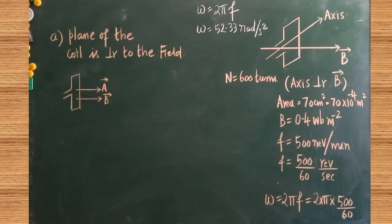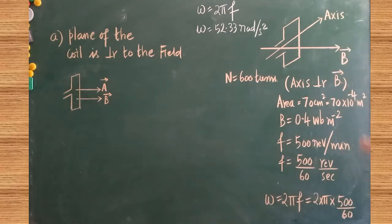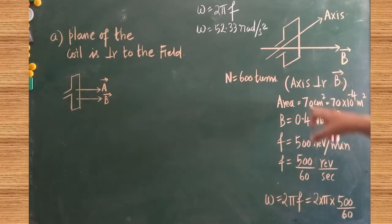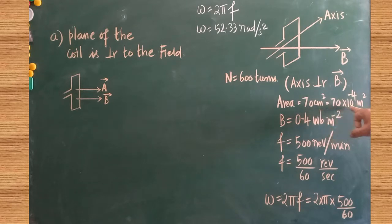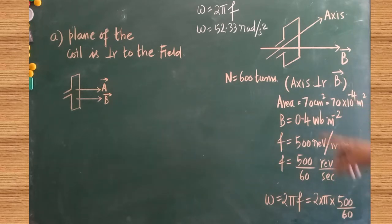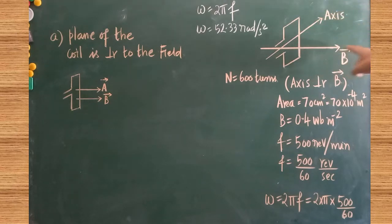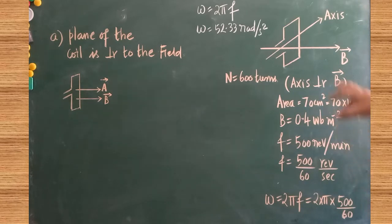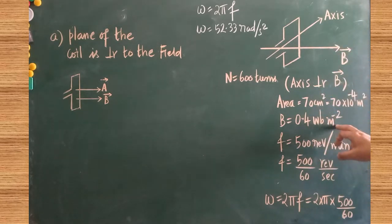First, understand the description of the problem. We have a rectangular coil whose area is 70 cm², which must be converted to SI units: 70 × 10⁻⁴ m². The axis of rotation and the magnetic field are perpendicular to each other, and the magnetic field strength is given as 0.4 Weber per meter squared.